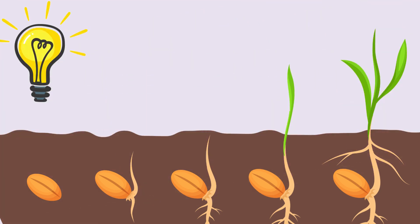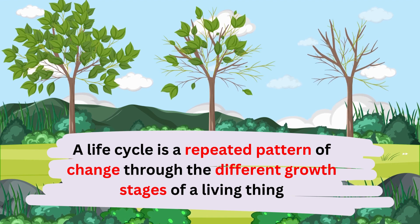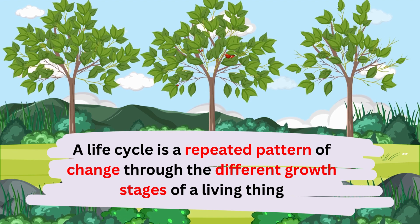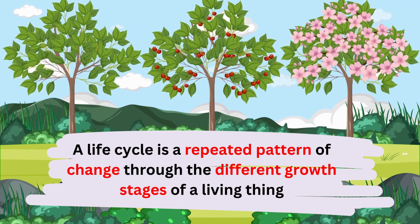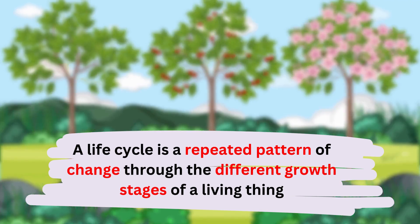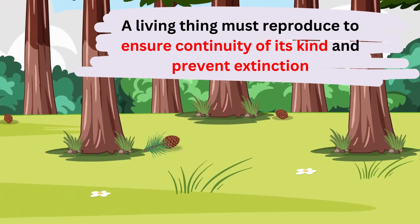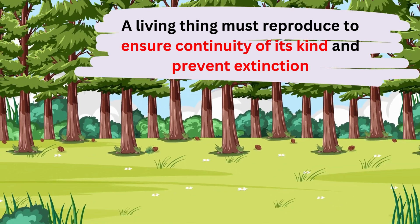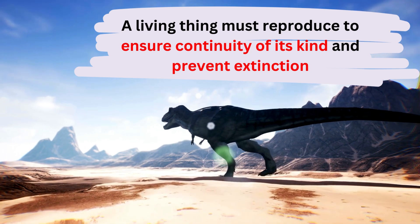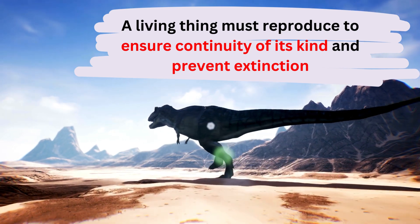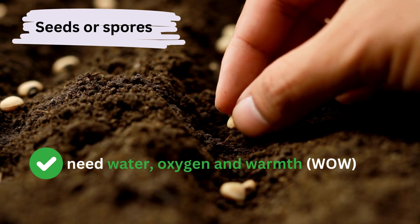A life cycle is a repeated pattern of change, going through the different growth stages. It doesn't have a start or end. Living things must reproduce to ensure the continuity of its kind and prevent extinction. Let's start at the seed or spore. They need water, oxygen and warmth.